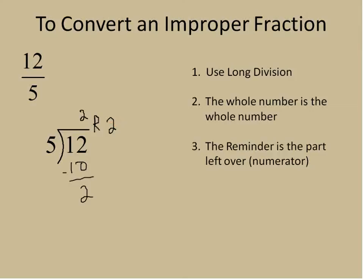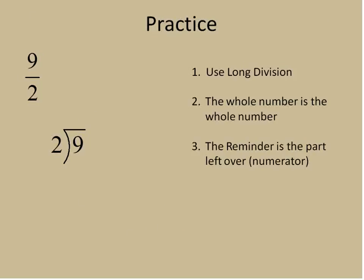Well, what that remainder means in terms of fractions is this. It means that we have 2 as a whole number with a remainder of 2 over 5. So in other words, the fraction of 12 over 5 is equal to 2 and 2 fifths. That's really all there is to it. The whole number here is our whole number. The remainder is the numerator, and the denominator remains the same.